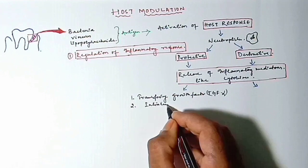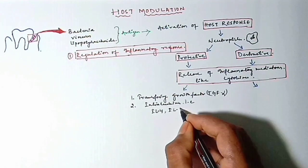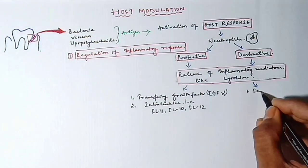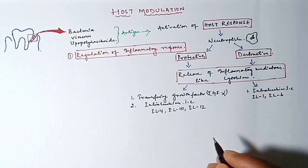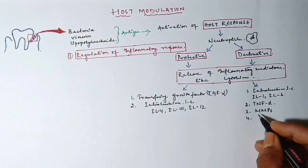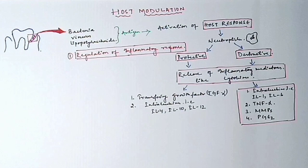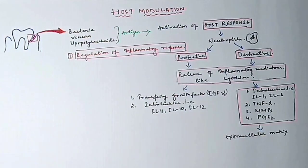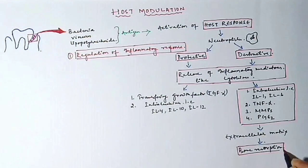Now destructive cytokines cause extracellular matrix destruction which will eventually lead to bone resorption. Then how can we stop it? With the help of anti-cytokine therapy, that is TGF-alpha, interleukins 4, interleukins 10 and interleukins 12 that are the protective ones. We can give them systemically.